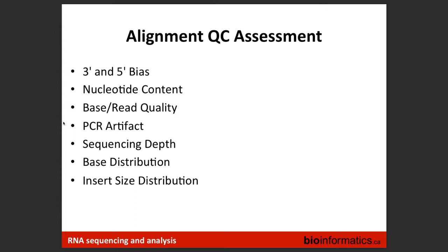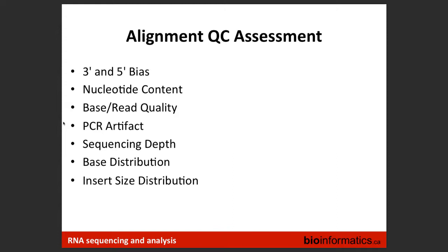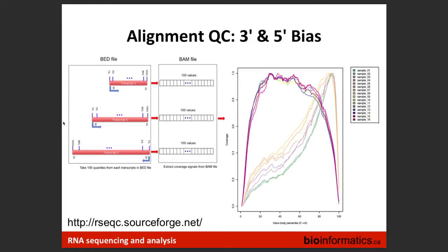The next part of this module is QC assessment — looking at metrics to tell us whether the library construction went well, whether alignments worked, and whether we can move forward to expression estimation or need to redo sequencing or realignment. This is one of the most crucial steps. We're using a tool called RSeQC. The first metric I look at is coverage bias across the transcript body.